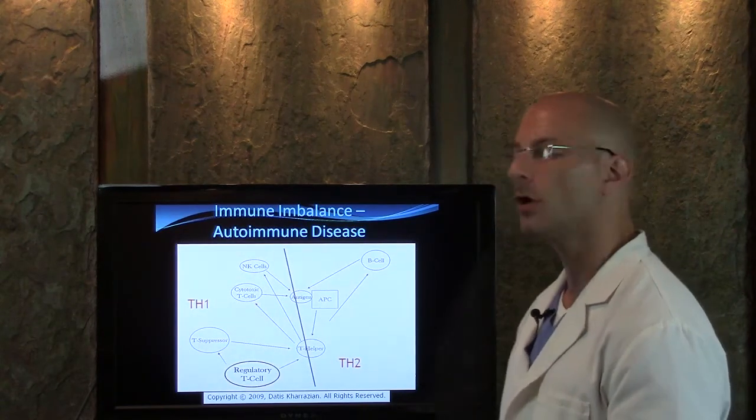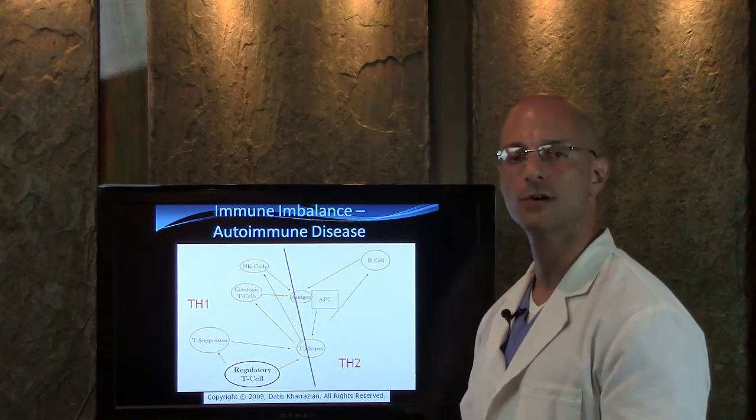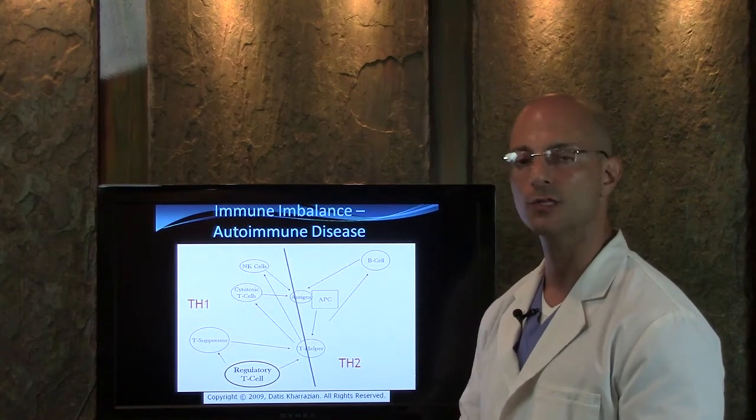When we have an immune imbalance, we can get an autoimmune disease, and this can stress the nerves, the thyroid, the stomach, the brain, the bones, the joints, anything.